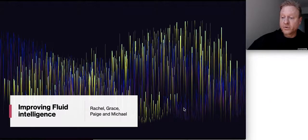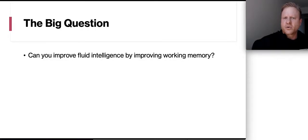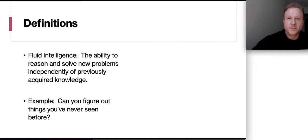on how we can actually improve fluid intelligence. Note to my team, some of these slides we may not want in the actual presentation, but we could keep them for the appendix to use during Q&A. Here's the big question. Can you actually improve fluid intelligence by improving working memory? Let's start with a few definitions first. Fluid intelligence is simply the ability to reason and solve new problems independently of previously acquired knowledge. An example? That's simply figuring out things that you've never seen before, being able to solve new kinds of problems.